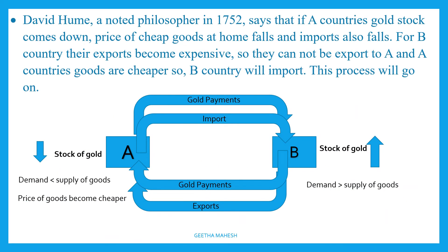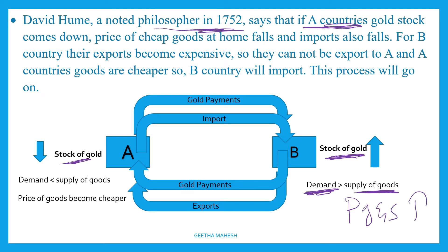However, philosopher David Hume in 1752 explained that there is no need to worry about Country A's condition. When all the gold accumulates in Country B, demand for goods in Country B will exceed supply, causing prices to rise. In Country A, where gold in the hands of the public is less, demand falls and supply exceeds demand, so prices of Country A's goods decrease.